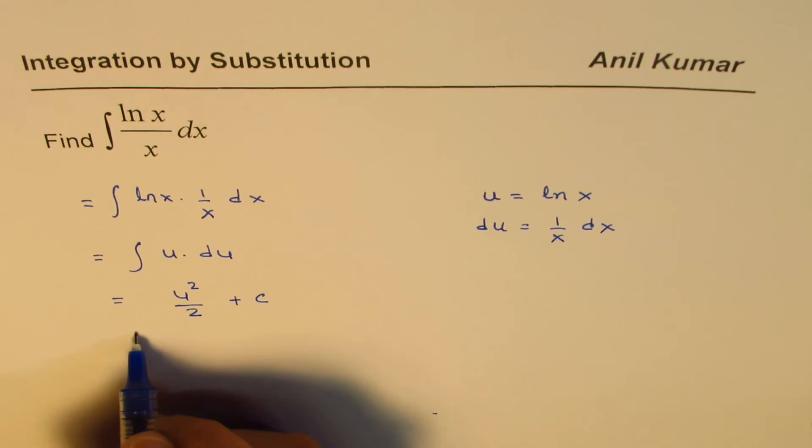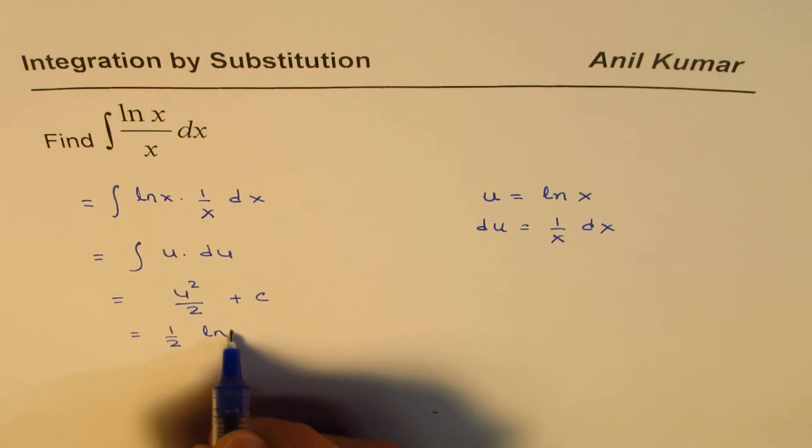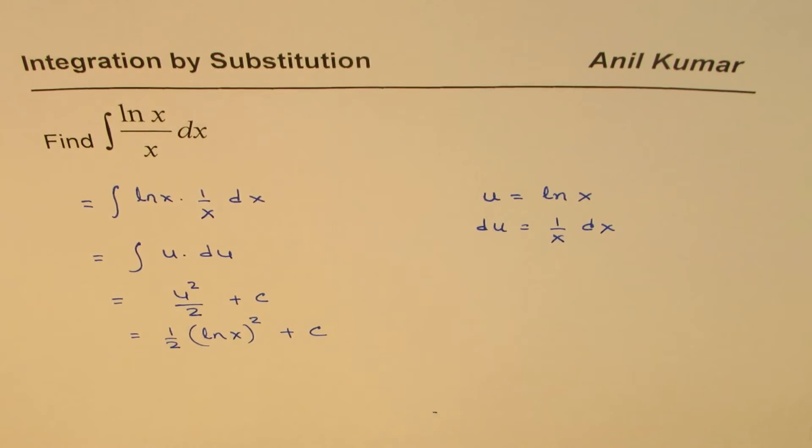u is ln x. So, we could write this as half of ln x whole squared plus c as our answer.